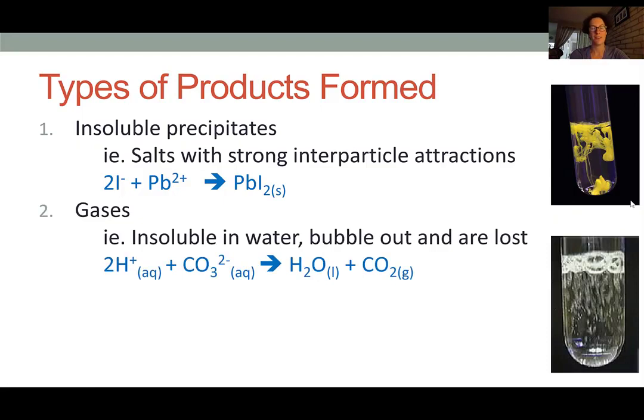The second type of product is a gas. So when we say that a product is formed, that means a new molecule has been created that can no longer form ions in solution. So once a solid is formed, it's no longer in solution. If a gas forms, that gas will leave the solution in the form of bubbles. And so it will no longer be in the water anymore, so it has become a product.